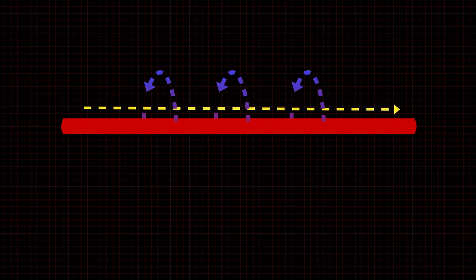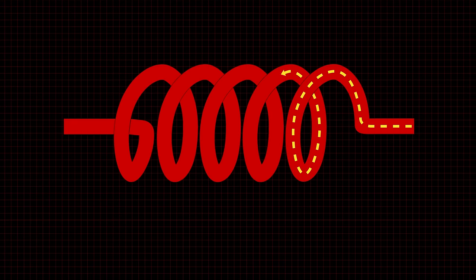If you coil the conductor and allow current to flow through it, each individual loop creates a magnetic field. These individual fields combine to create one large magnetic field.